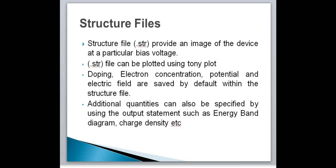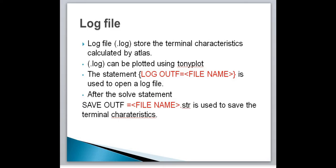The log file stores the terminal characteristics calculated by Atlas — these are currents and voltages at electrodes. In DC simulation, the bias values are stored; in transient simulation, the time is stored; in AC simulation, the small signal frequency, conductance, and capacitance are saved. The log file can be plotted using TonyPlot. The statement 'log outf filename' is used to obtain a log file. After the log statement, terminal characteristics from the solve statement are saved into the file. The statement 'save outf filename.str' is used to save the structure data.